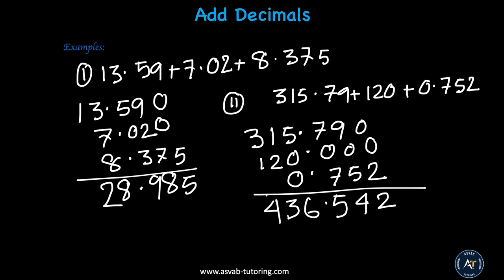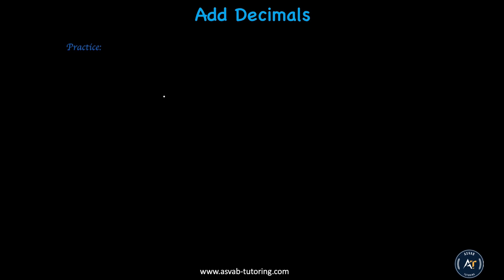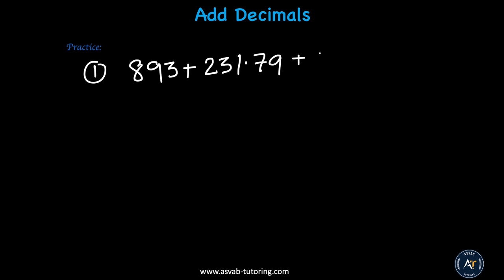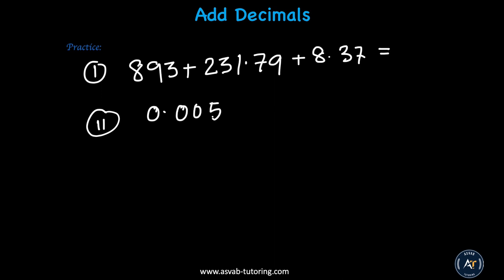Let's do some practice problems so you can try by yourself. Number 1: 89.3 plus 31.79 plus 8.37. Number 2: 0.005 plus 7.29 plus 813. Try by yourself.